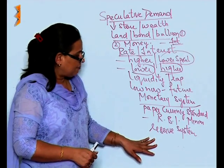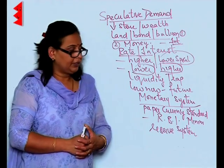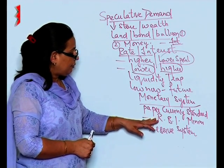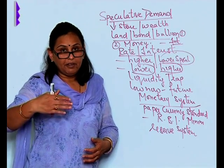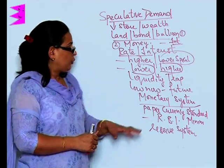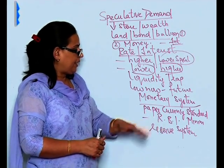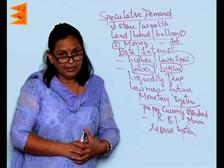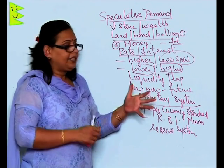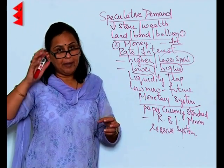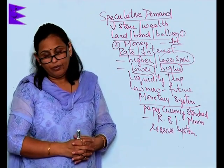For issuing paper currency, the Reserve Bank of India maintains a minimum reserve system — it holds equivalent gold in its stock for whatever currency it is issuing. So, though India has a representative money system, that is a paper currency standard, the Reserve Bank of India withholds the value of that representative currency in the form of gold reserves.